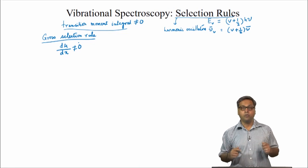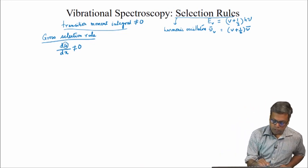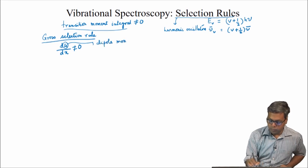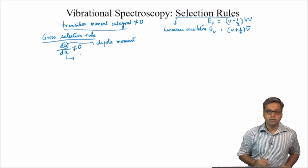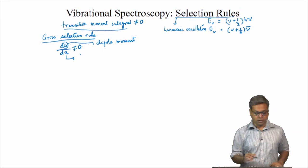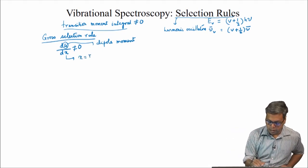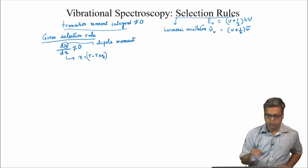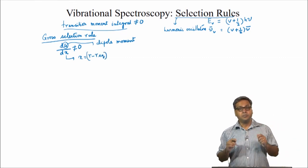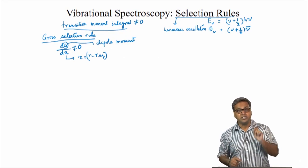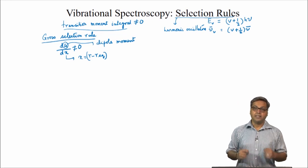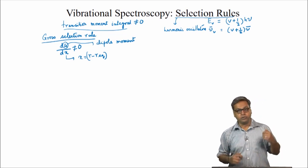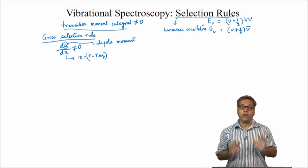Here μ is the dipole moment, and x is the displacement from the equilibrium position, that is x = r − r_equilibrium. This means that the dipole must change with displacement at the equilibrium position. As the vibration goes through the equilibrium position, the dipole moment of the molecule must be changing.